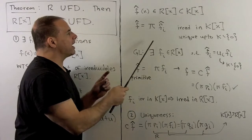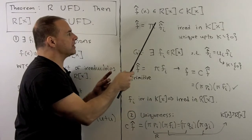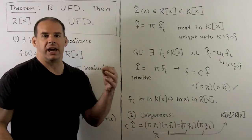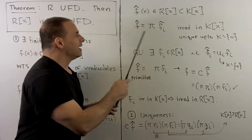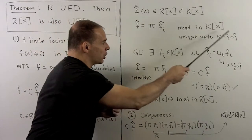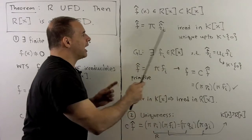And in here, we can factor f̂ as a product of f̂ᵢ's, each irreducible in K adjoin x. This is going to be unique up to an element of K*.